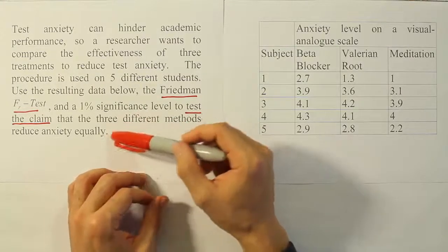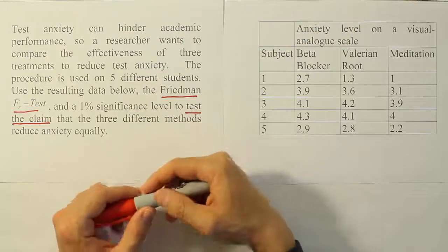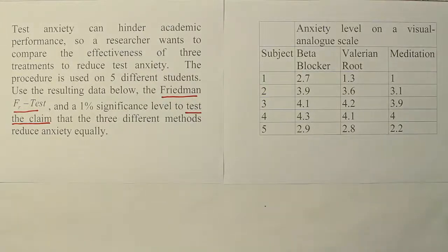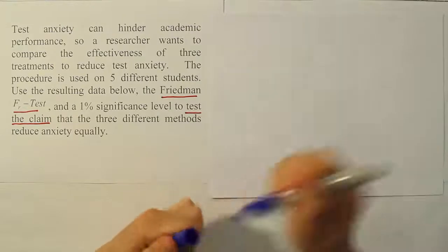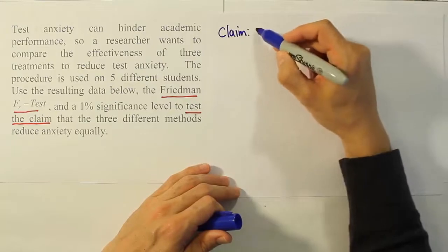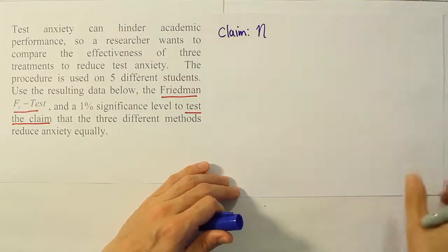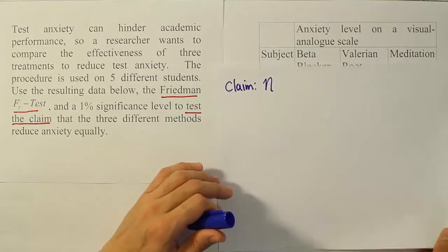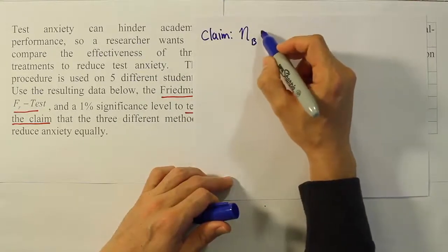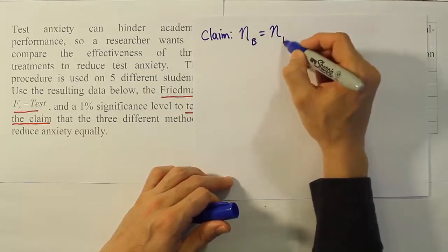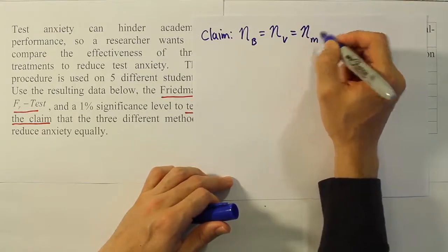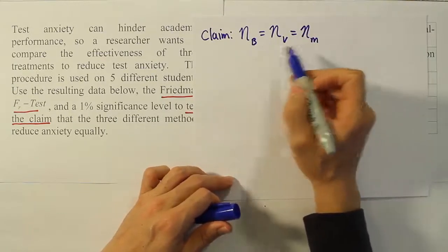We're told that we need to use the Friedman FR test here at a 1% significance level to test the claim. It's a hypothesis test clearly using the Friedman FR test that the three different methods reduce anxiety equally. In other words, we're going to say that their median reduction is the same for each group.